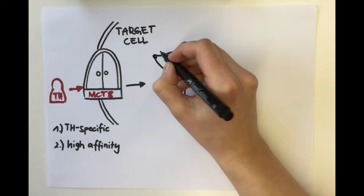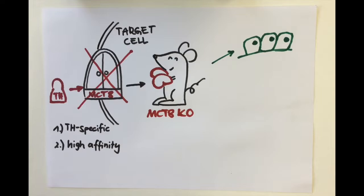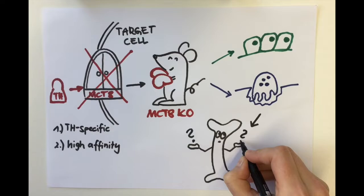To investigate the role of MCT8, we generated conditional knockout mice, specifically targeting either osteoblasts or osteoclasts. So, how will a targeted MCT8 deletion affect the bone?